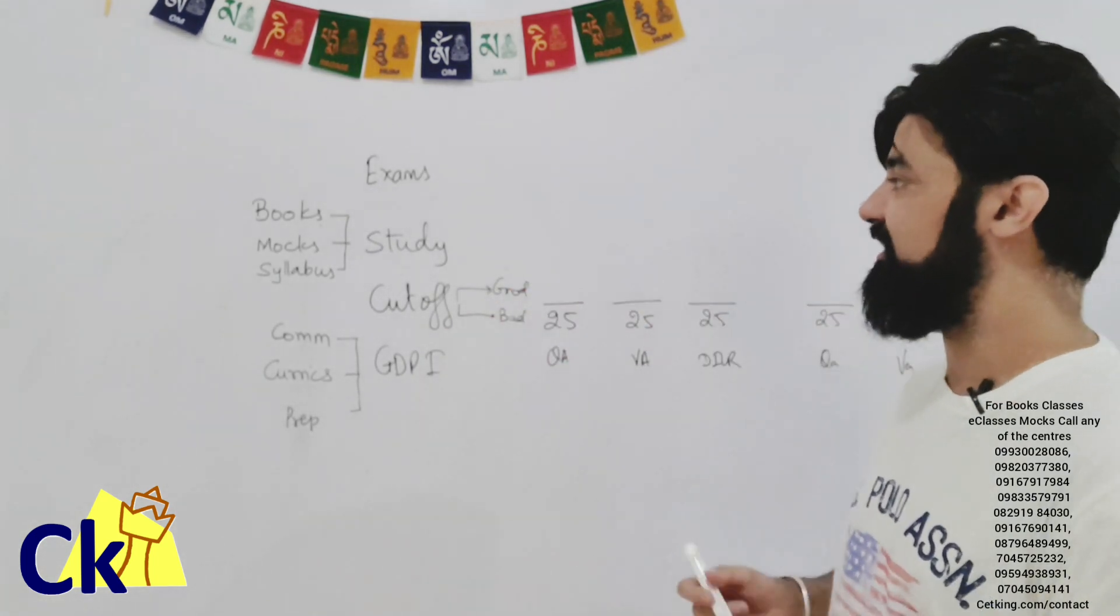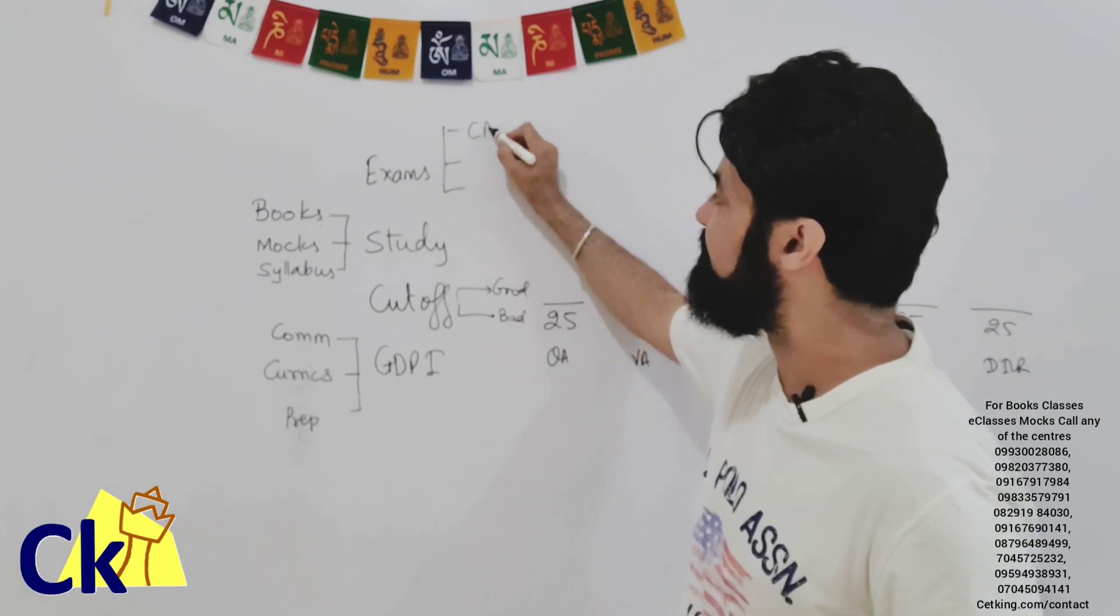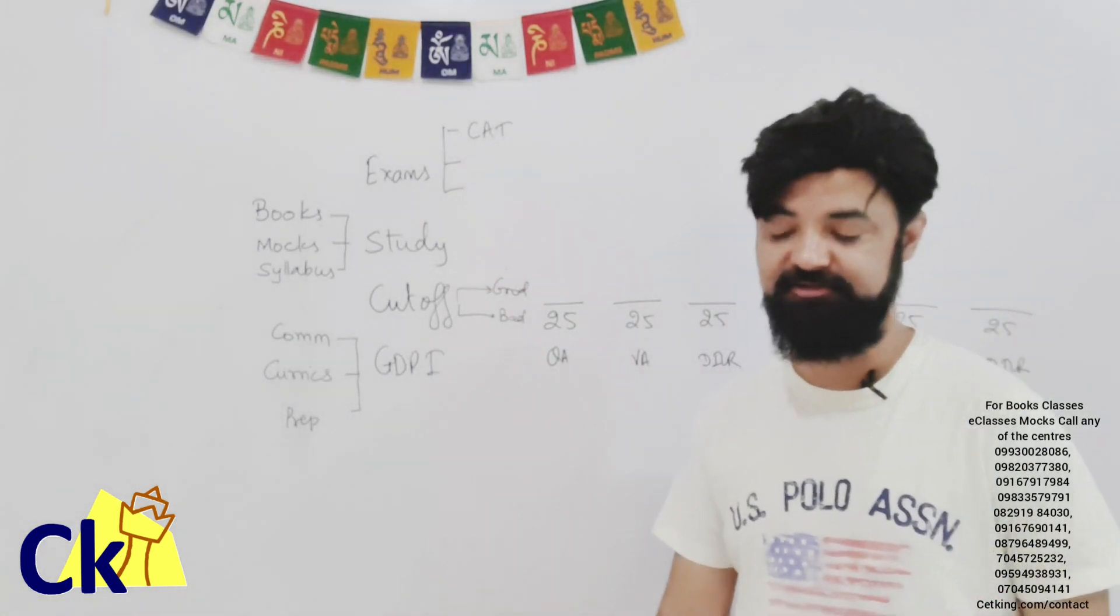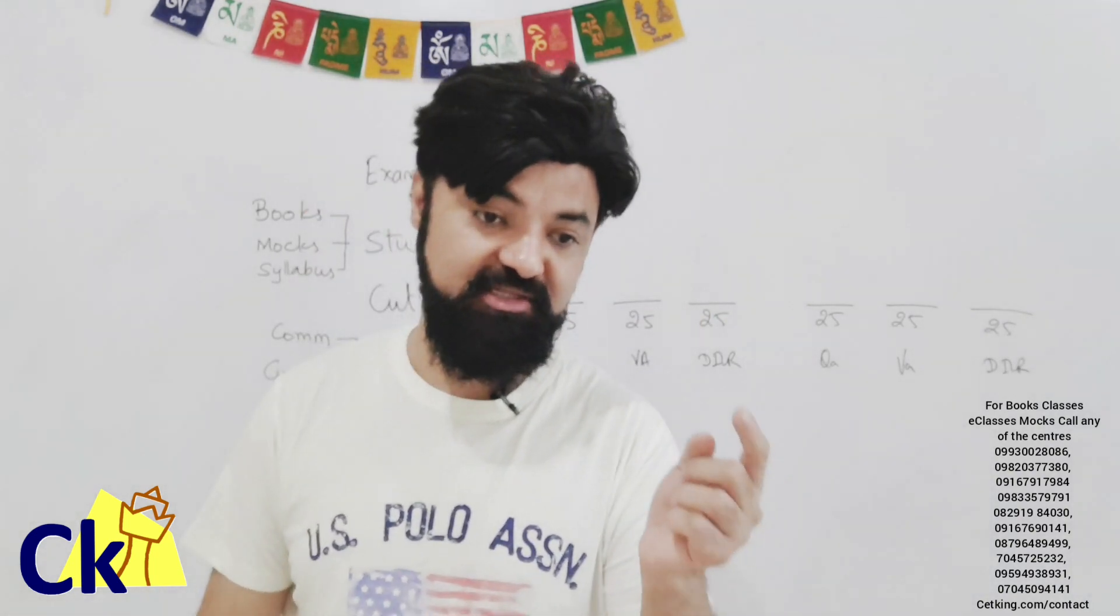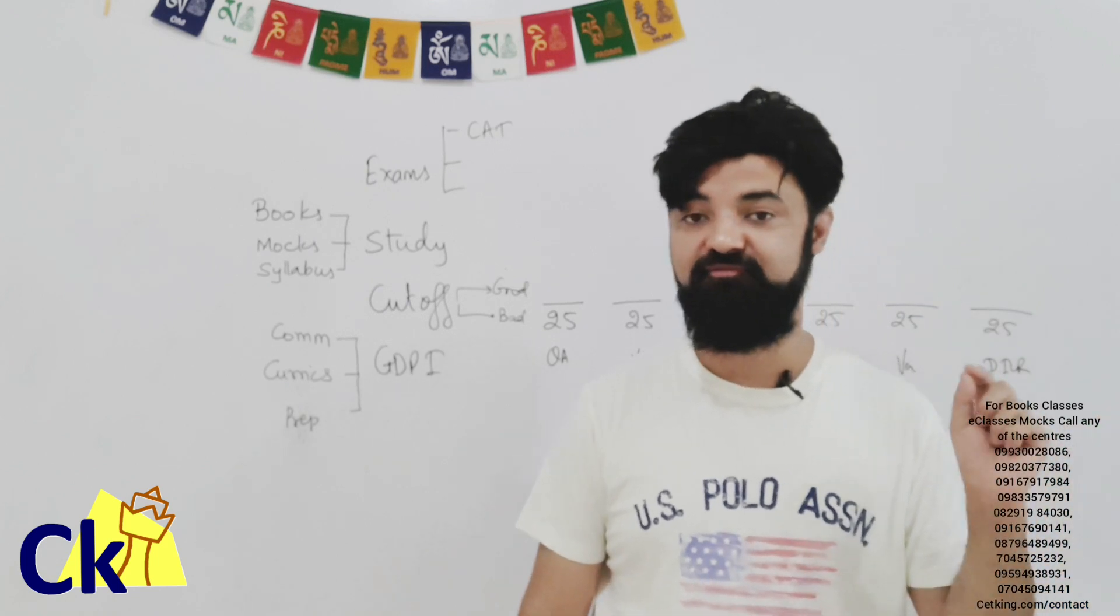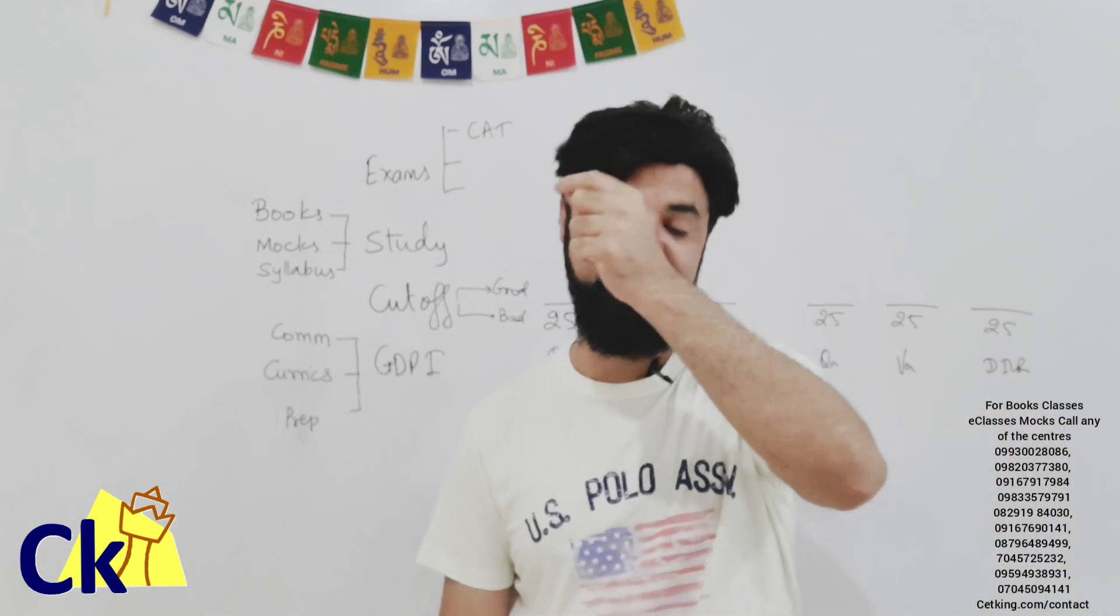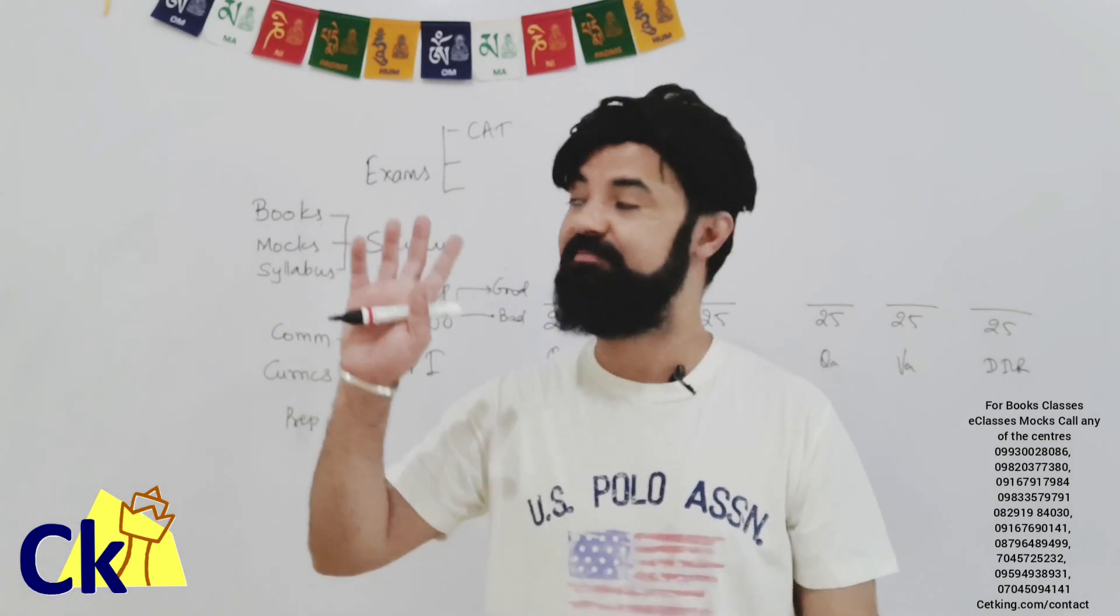Number one thing is talking about the exams, which exams I can target. CAT of course is the main exam because maximum number of seats are through CAT. There are 200 seats on average in all the main IIMs for reserved category students. In every other college, the number falls down to single digit also.